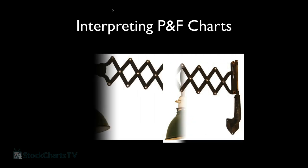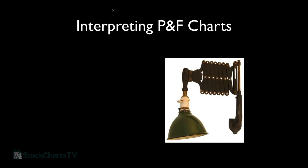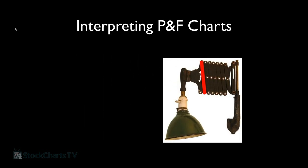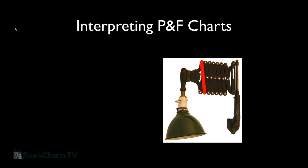I like to think about PnF charts using a telescoping lamp analogy. When the lamp is extended, the bars are at a 45-degree angle. When collapsed, those same bars become vertical — 90 degrees to the ground. That's conceptually what a PnF chart does: it takes a bar chart where price trends are at an angle and collapses them so those trends become vertical.